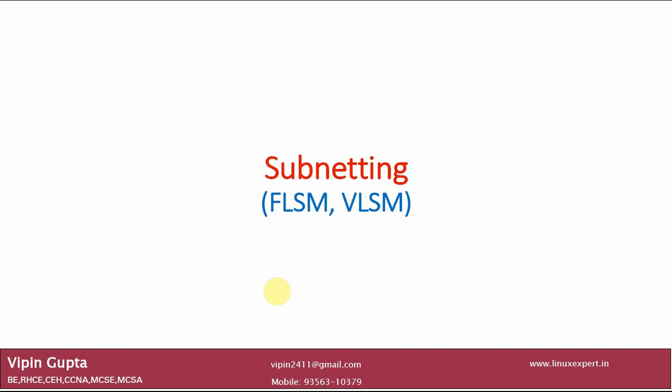Now when we talk about subnetting, it is of two types: FLSM, meaning fixed length subnet mask, and another is variable length subnet mask, VLSM. We are going to discuss both of these. We will be doing the subnetting of Class C addresses, Class B also, and Class A also. In Class C, we will be looking at both methods — one very detailed method and one shortcut. So we will be covering one easy way and one complex way of calculating subnetting.